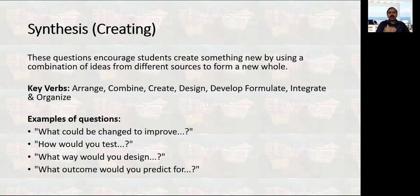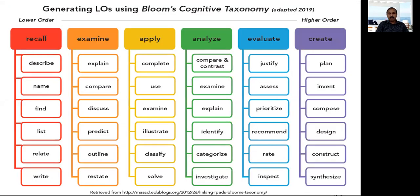Finally, level six is Creating — the topmost level of Bloom's taxonomy — creating something new. If you use keywords in your questions like: arrange, combine, create, design, develop, formulate, integrate, organize — you are testing level six learning. Sample questions include: What changes would be made to improve something? How do you test? In what way would you design something? What outcomes would you predict? If you use these kinds of questions, you are at level six.